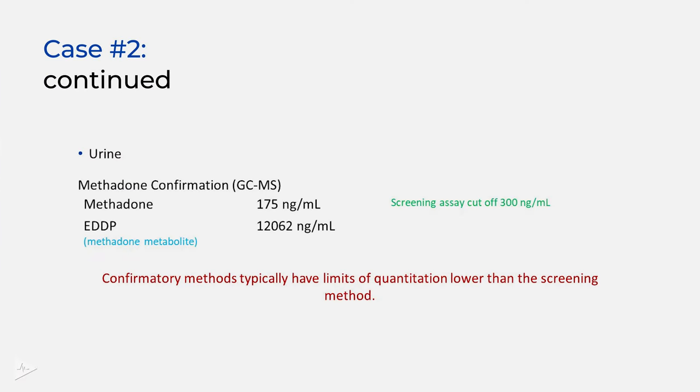If you go and order a confirmatory test, what comes up is the methadone is in fact 175 nanograms per mL, and EDDP — which is a methadone metabolite — is over 12,000 nanograms per mL. Two things to note here: confirmatory methods typically have a lower limit of quantitation than screening methods do. A screening assay may have a cutoff of 300, where the confirmatory assay found methadone at 175 — so it's not surprising it was negative on the screen. But you can see the methadone metabolite is quite high.